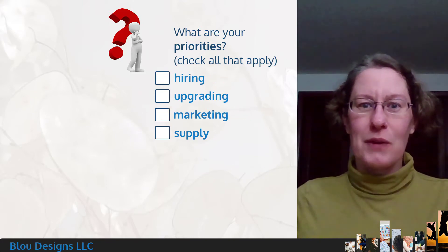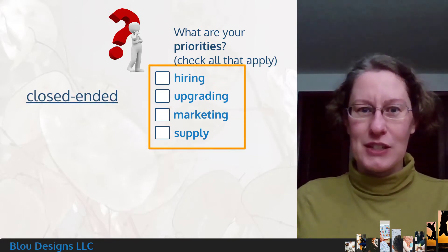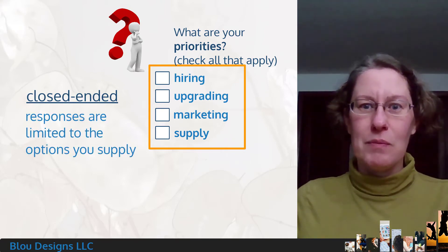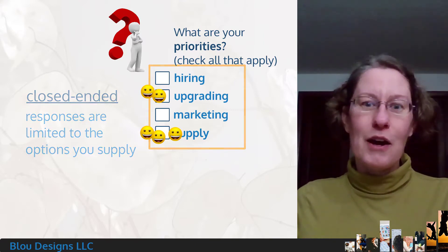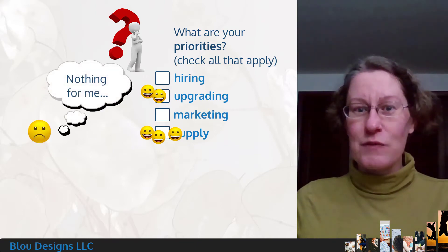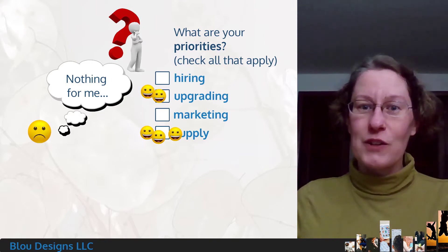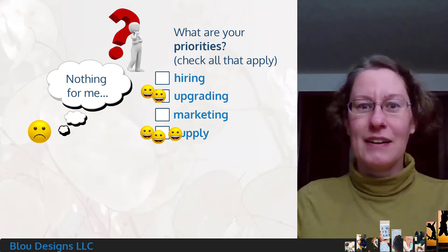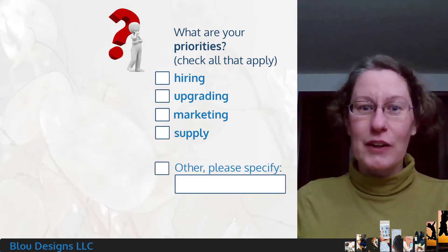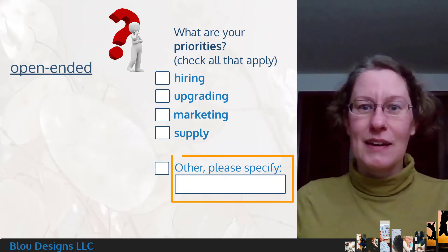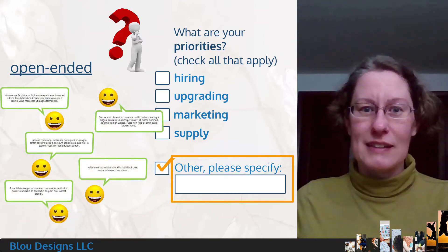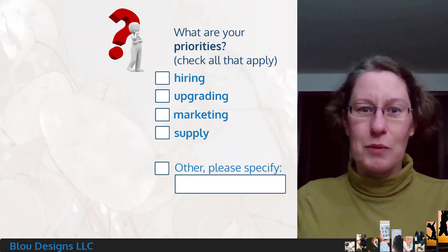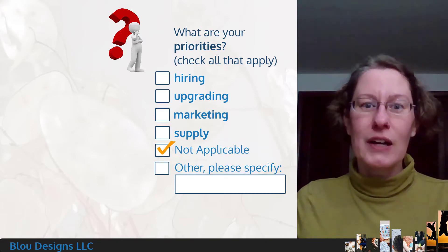The multi-select checkbox question is typically considered a closed-ended question. Closed-ended means that you supply a list of options to choose from, and the number of different answers you might get back is limited by the range of options you've supplied. But what about options that aren't on your radar, or respondents feeling like none of the options apply? You can address both concerns by adding "Other — Please Specify" to the end of your list. That Other option is open-ended, meaning respondents can fill in the blank. If the question won't apply to all respondents, also add a closed-ended option for Not Applicable.